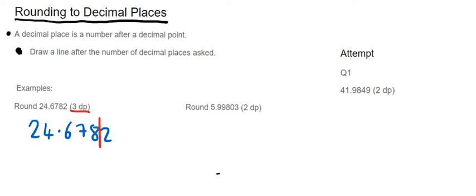Now we go back to our rules of rounding. If the number after the line is less than five, the number before the line stays the same. If it's five or more, the number before the line goes up by one. In this case the number after the line is 2, therefore the 8 before the line stays the same. So the answer is 24.678, rounded to three decimal places.